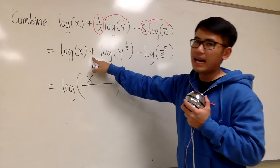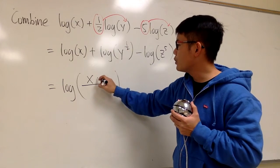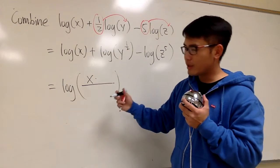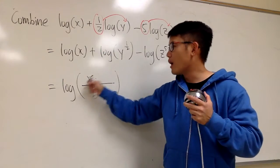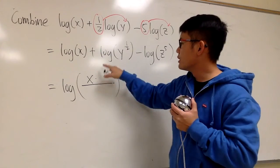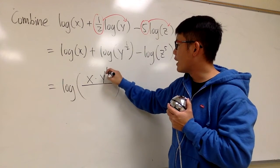Next, we add. That's also positive. Therefore, we put this on the top as well, which means we multiply. Remember, when you're adding two logs, inside you are multiplying. So we are multiplying this, which is y^(1/2).